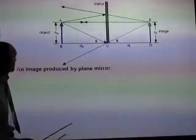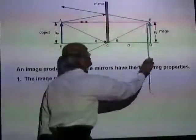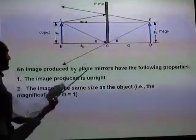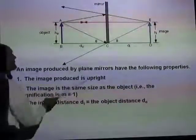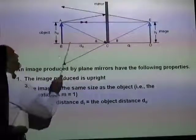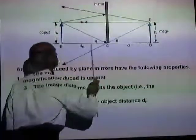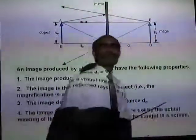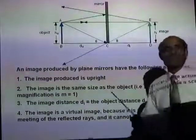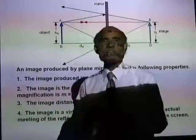Some characteristics of the image: the image produced is upright, the image is the same size as that of the object, and the image distance D_I — the distance of the image from the mirror — is the same as the distance of the object from the mirror, D_O. So D_I equals D_O. The image is also a virtual image — it really doesn't exist there. It's an illusion created by the rectilinear propagation of light.